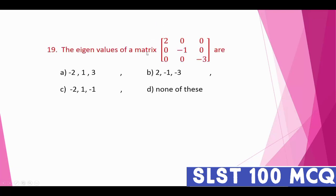Question number nineteen: for the 3×3 diagonal matrix with entries 2, −1, and −3, the eigenvalues can be found without calculation — the diagonal elements of a diagonal matrix are directly its eigenvalues: 2, −1, and −3.